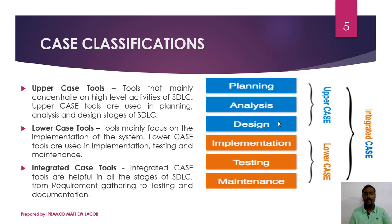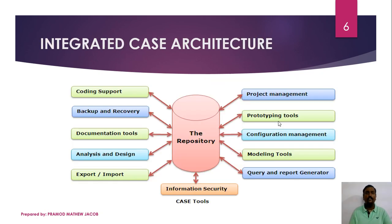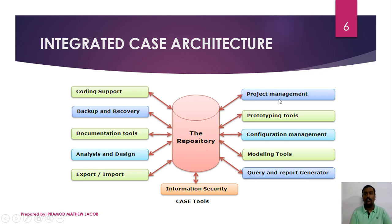There is also a hybrid category called integrated CASE tools, which integrate the features of both upper and lower CASE tools — automating all activities associated with a typical software development. The key component of a CASE system is a central repository, which consists of all documents, codings, designs, and models already developed in the company or related to a particular project. Based on the central repository, the various other CASE tools fetch information and generate the required output.